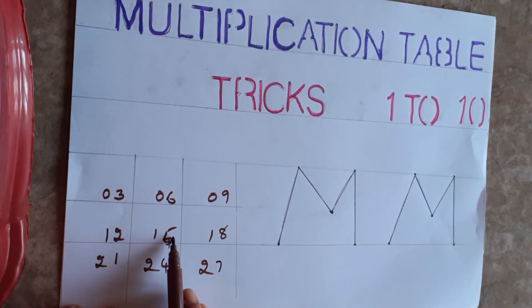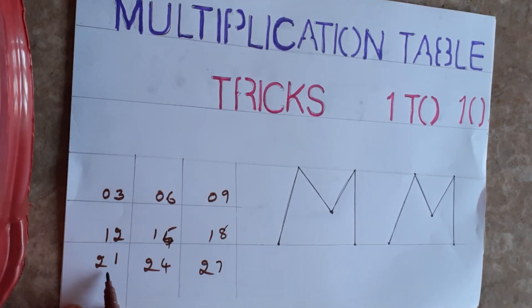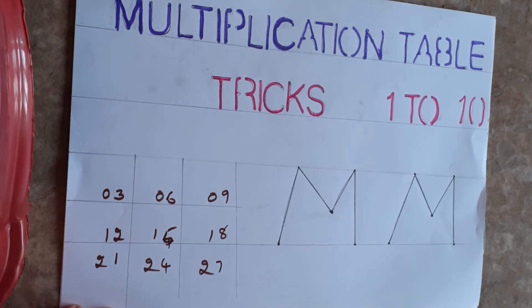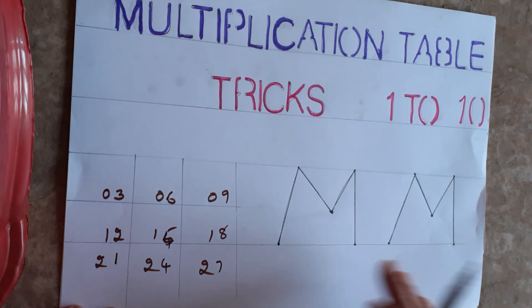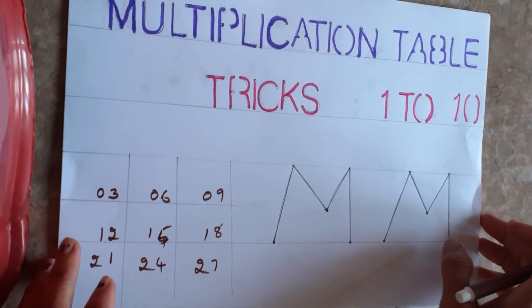See: 3 ones are 3, 3 twos are 6, 3 threes are 9, 3 fours are 12, 3 fives are 15, 3 sixes are 18, 3 sevens are 21, 3 eights are 24, 3 nines are 27, 3 tens are 30. You will get the complete third table. Now for the fourth table, just draw two M shapes like this.